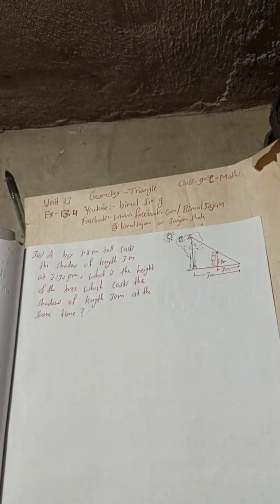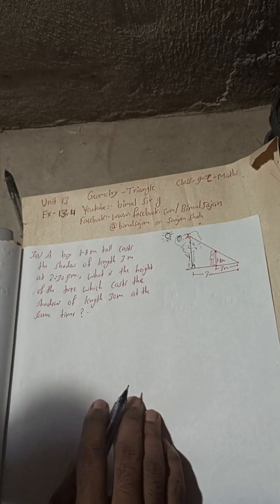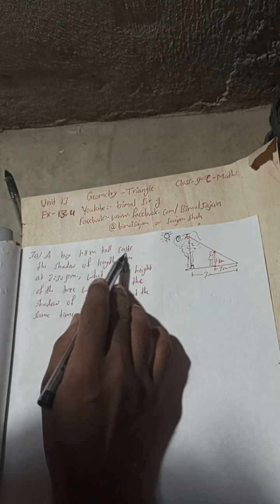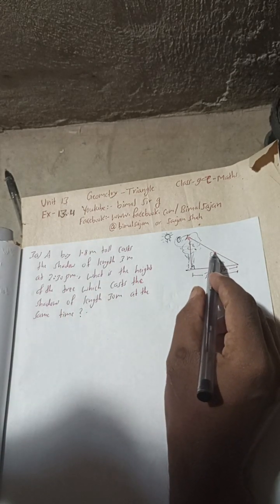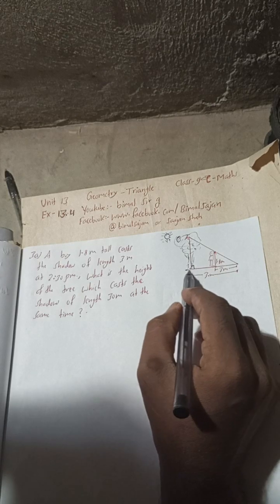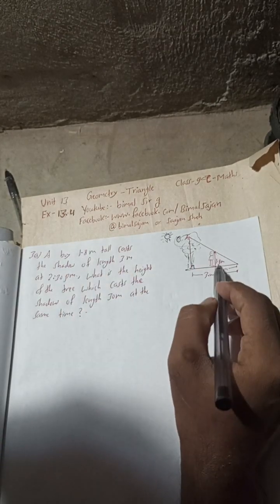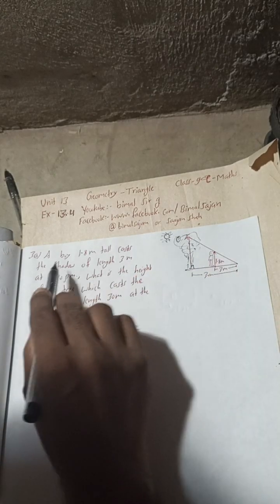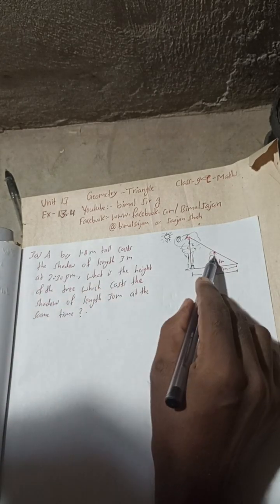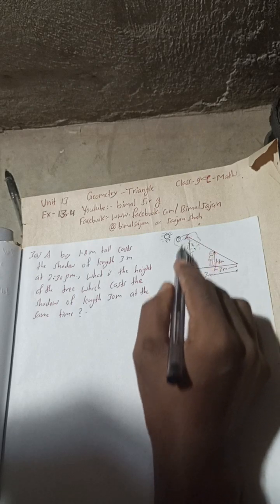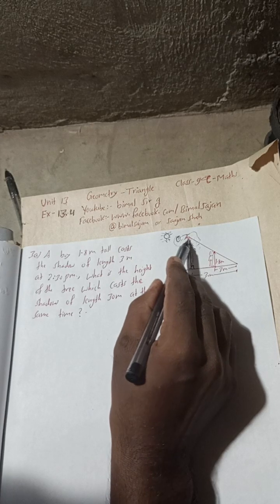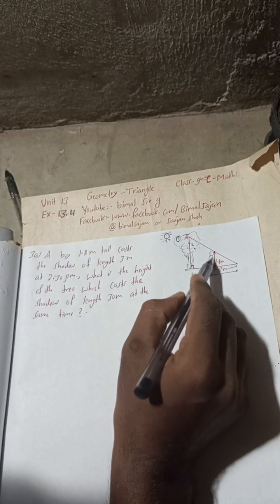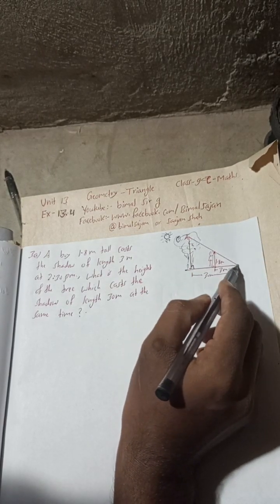Now let's begin the solution. Here is a boy 1.5 - actually 1.8 meters tall - who casts a shadow of length 3 meters. This is the boy standing here at ground level. There is a tree, and the sun casts the shadow. The boy is 1.8 meters tall and casts a shadow of 3 meter length.